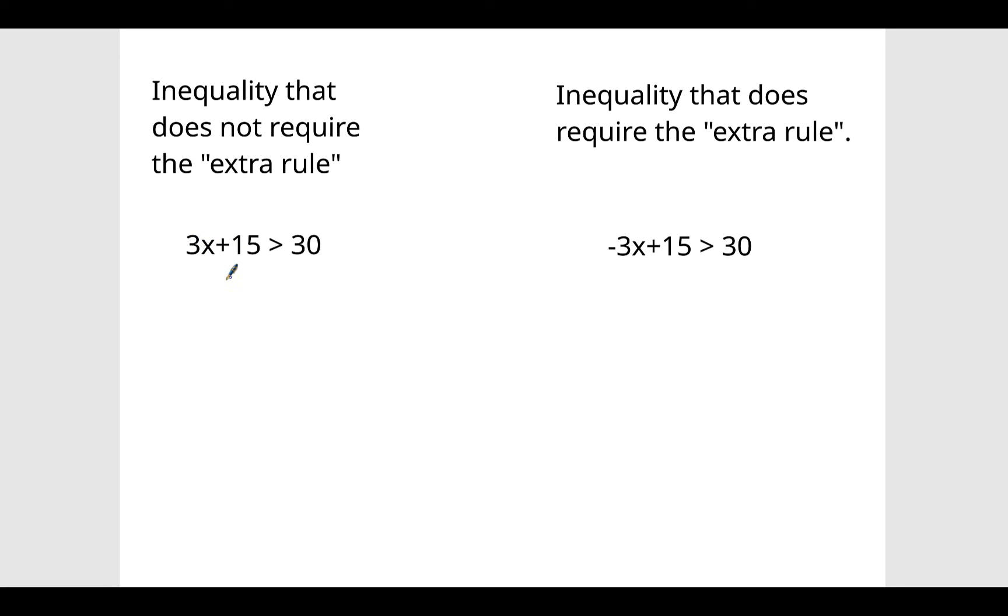So we're going to undo this by subtracting 15 and we're going to do that from both sides. So we're subtracting 15, but that doesn't trigger the rule. 30 minus 15 is 15.